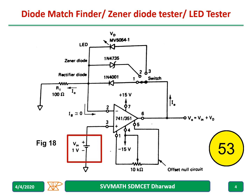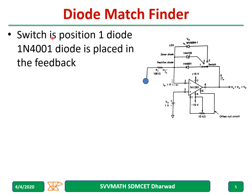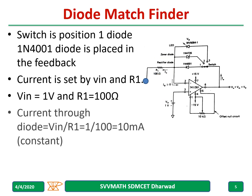One voltage is applied and 100 ohms is connected here, and a rotary switch is connected so that we can connect to the diode, Zener diode, or LED. In switch position one, the diode is connected in the feedback path, and the current is set by Vin and R1. With Vin equal to 1 volt and R1 equal to 100 ohms, the current through the diode is Vin divided by R1, which is 10 milliamps, and it is constant.